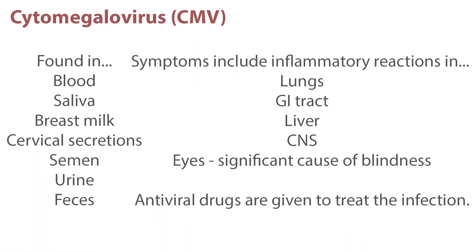Cytomegalovirus and herpes simplex virus types 1 and 2 are viruses that can significantly affect AIDS patients. CMV is found in blood, saliva, breast milk, cervical secretions, semen, urine, and feces. It usually doesn't cause symptoms in a person with an intact immune system, but in the HIV patient symptoms include inflammatory reactions in the lungs, GI tract, liver, CNS, and eyes. CMV is a significant cause of blindness in the HIV patient. Antiviral drugs are given to treat the infection.